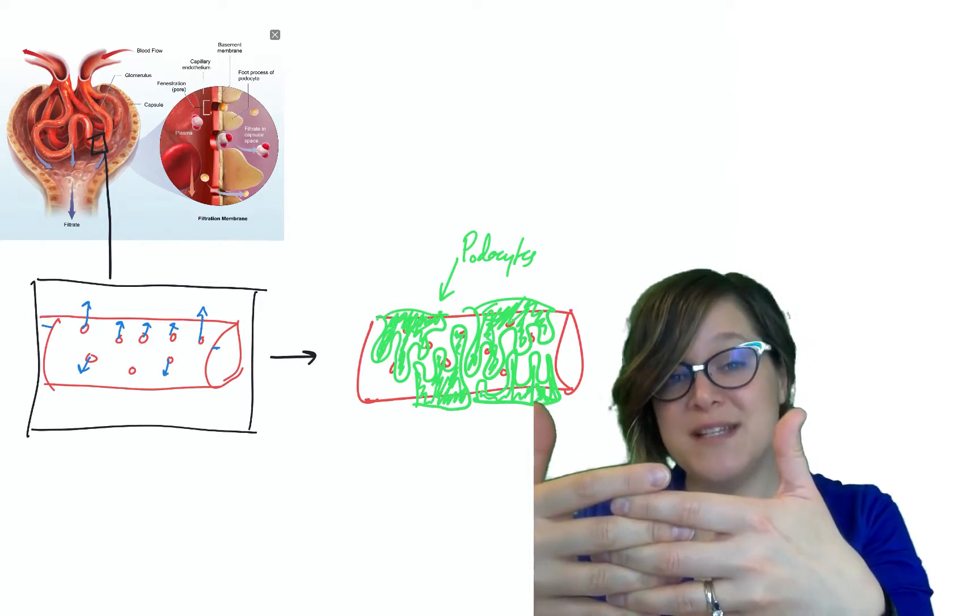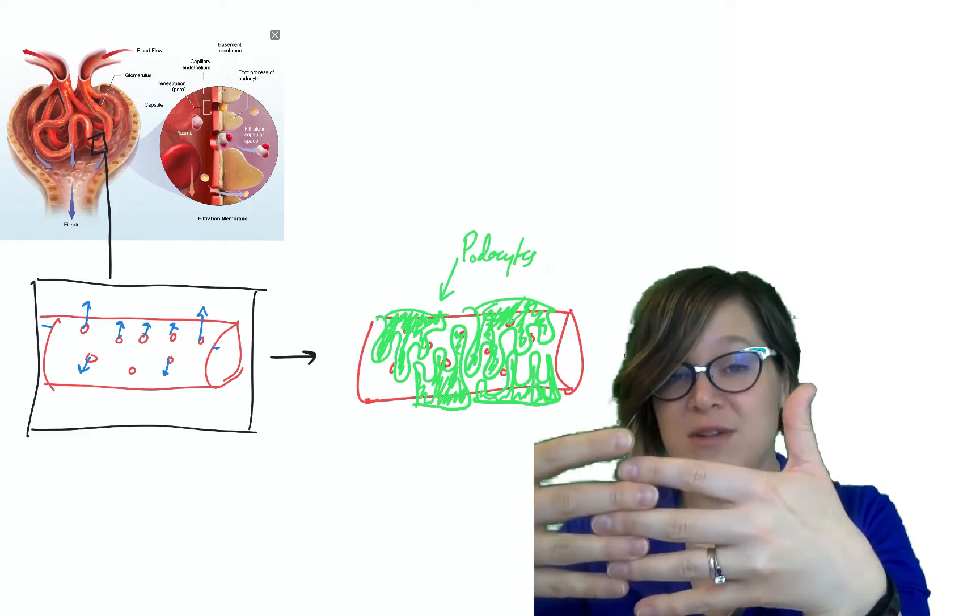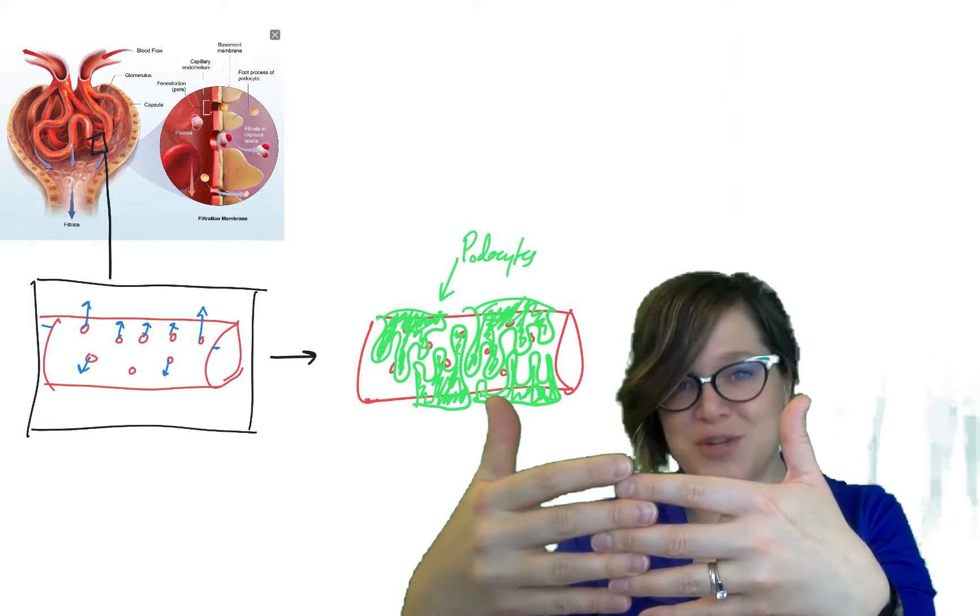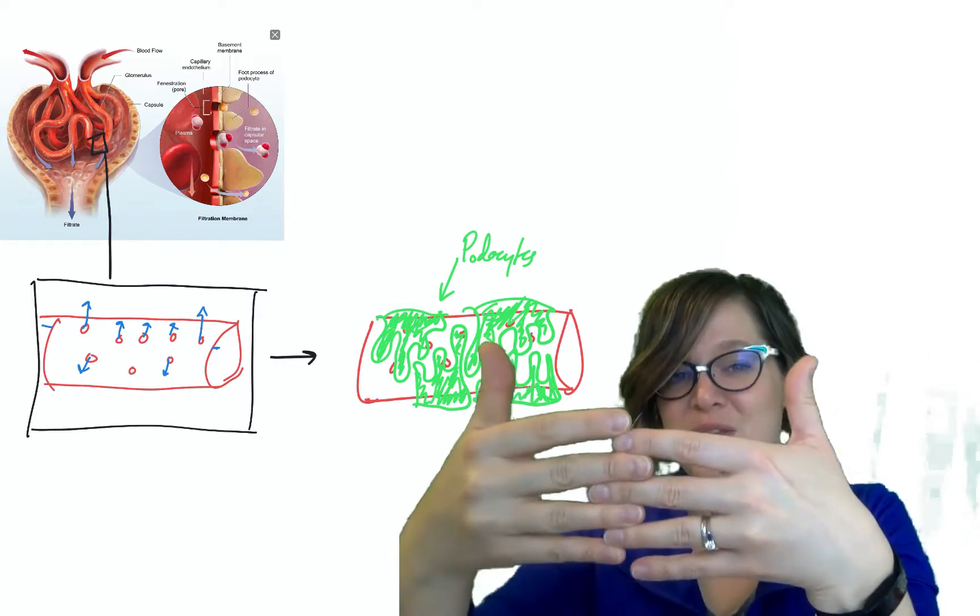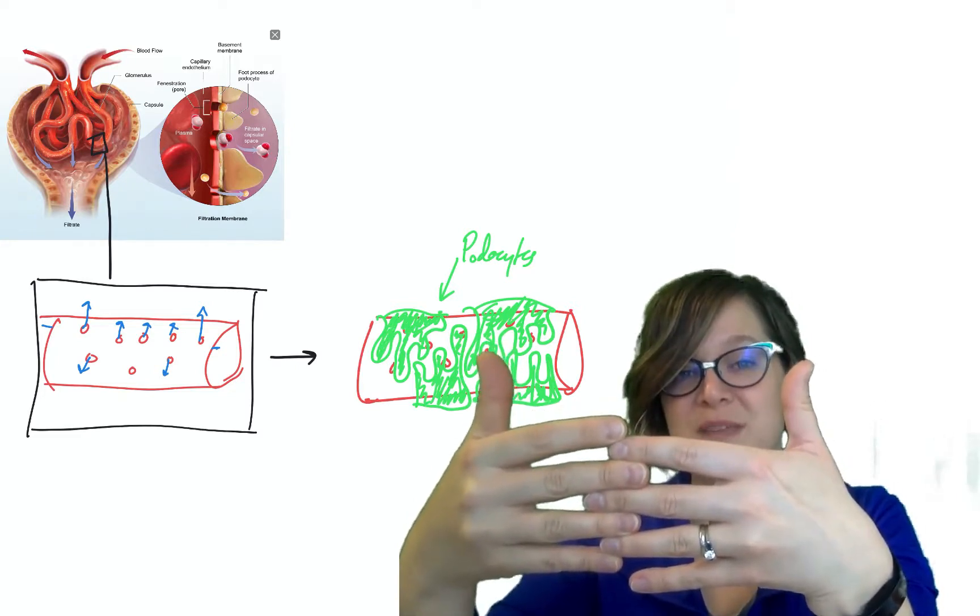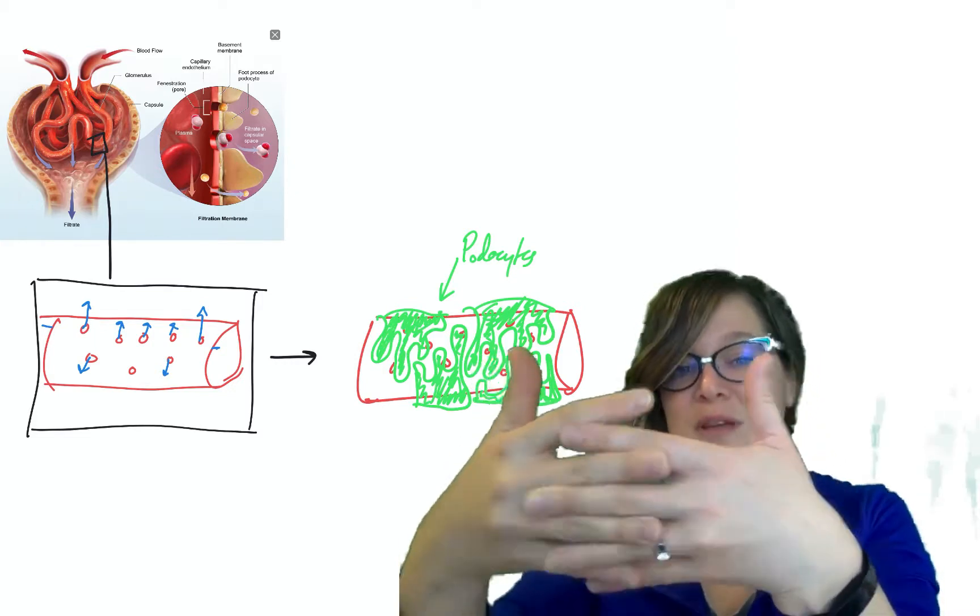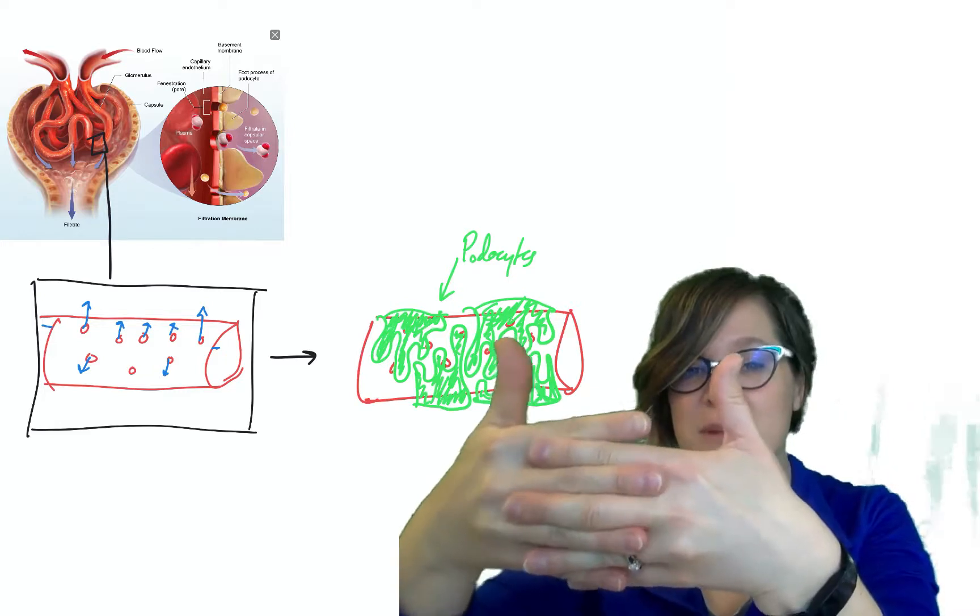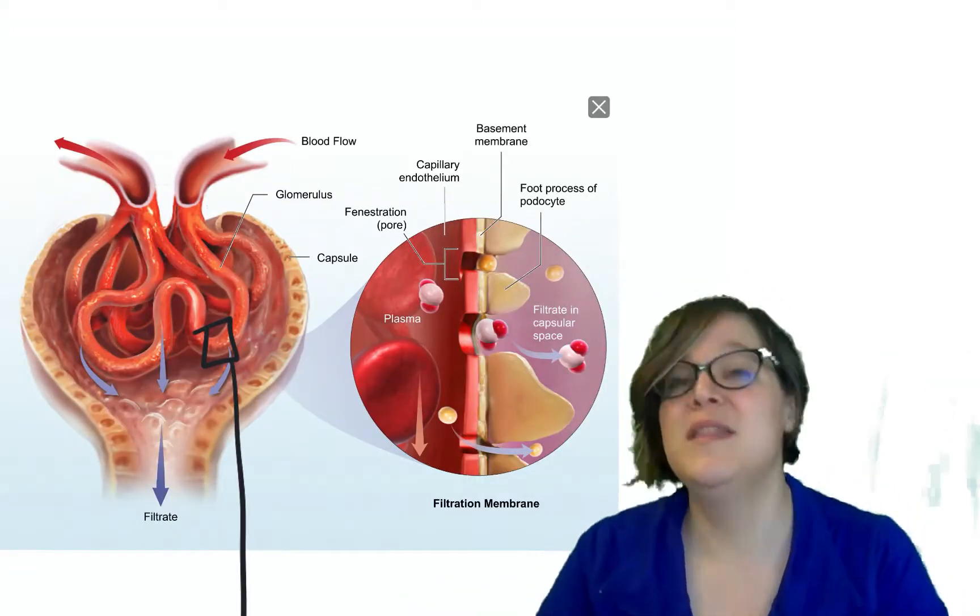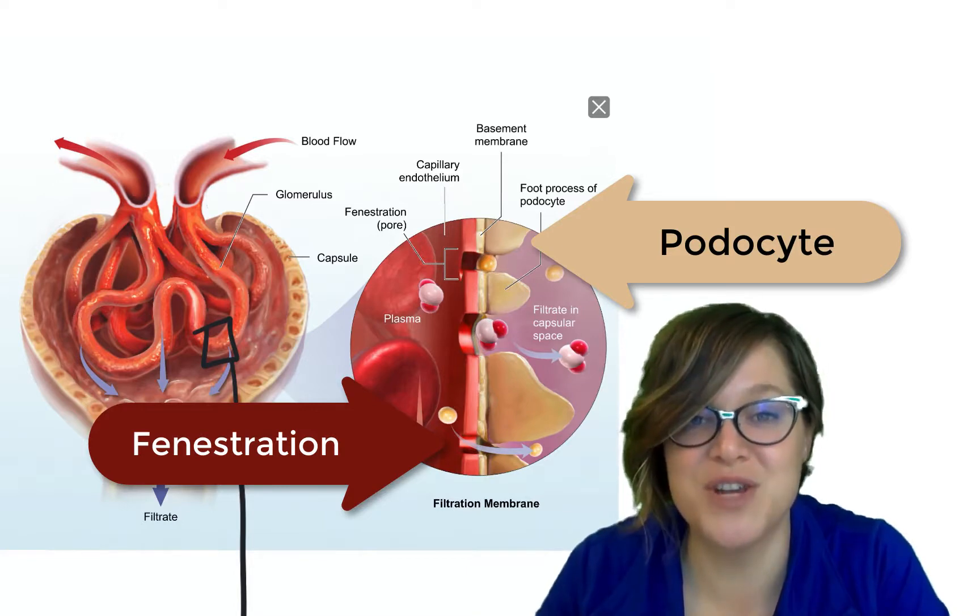The cool thing about podocytes is we can actually adjust how tight they are together or how loose. So in times where maybe the blood pressure is low and you don't have a lot of pressure pushing fluid through, you're going to make the podocytes further apart to allow more fluid to go through. When you've got high blood pressure or maybe too much fluid that's trying to get through, you clamp off the flow by making those podocytes closer together, and now less fluid will seep through. The area between the podocyte and the fenestrations is called a filtration slit.